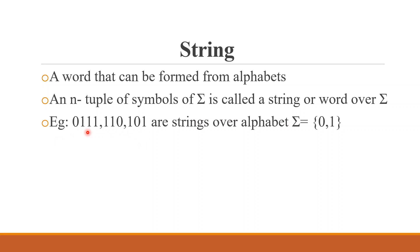Here are some example strings. Strings like 0, 1, 11, 111, 1010, 01 — these are all strings over the alphabet sigma equals {0, 1}. To summarize: alphabet is represented using sigma, it is a finite non-empty set of symbols. A string is an n-tuple of symbols of sigma, or a word that can be formed from alphabets.